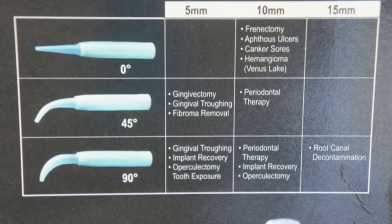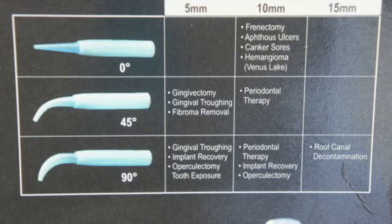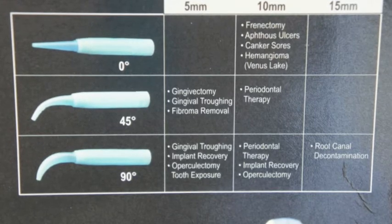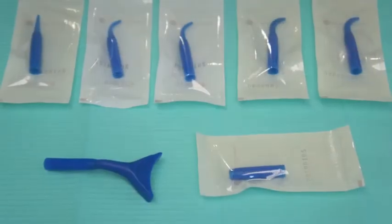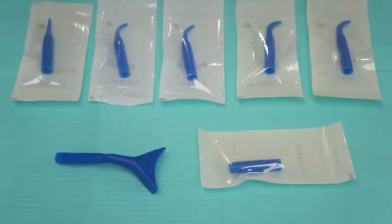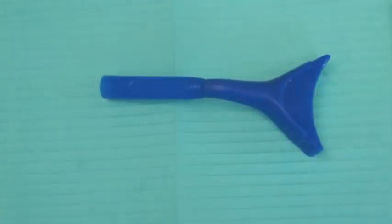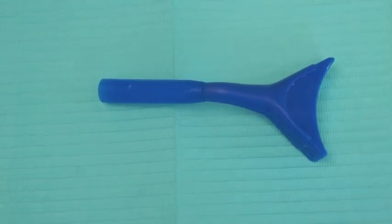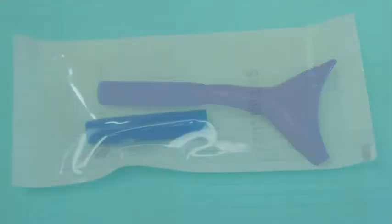Typically I like the 90 degrees 10 millimeter for most of my procedures including crown troughing. You can see here all the tips including on the top row the disposable tips and on the bottom row the bleaching tip that you see here which is the only non-disposable tip. It must be used with the Picasso 7W.